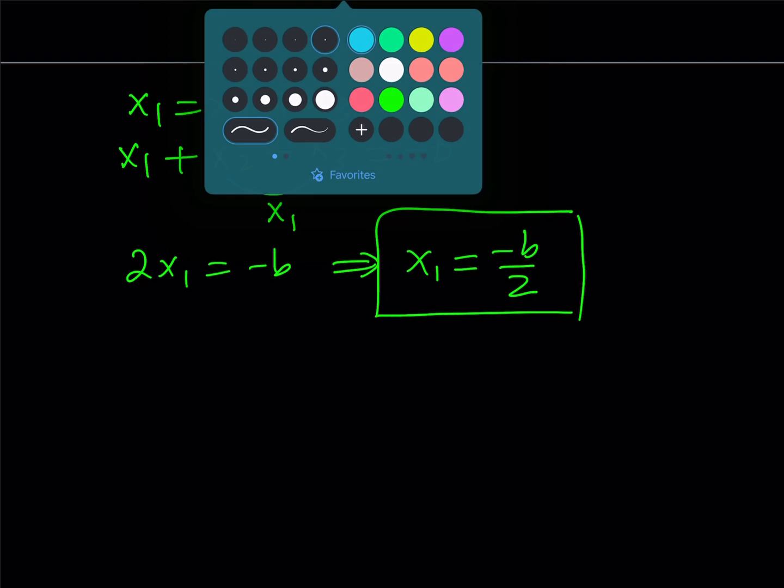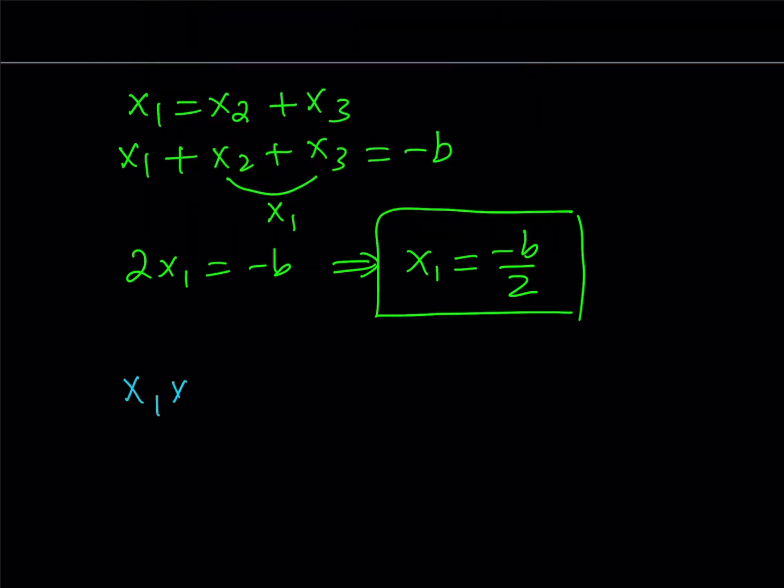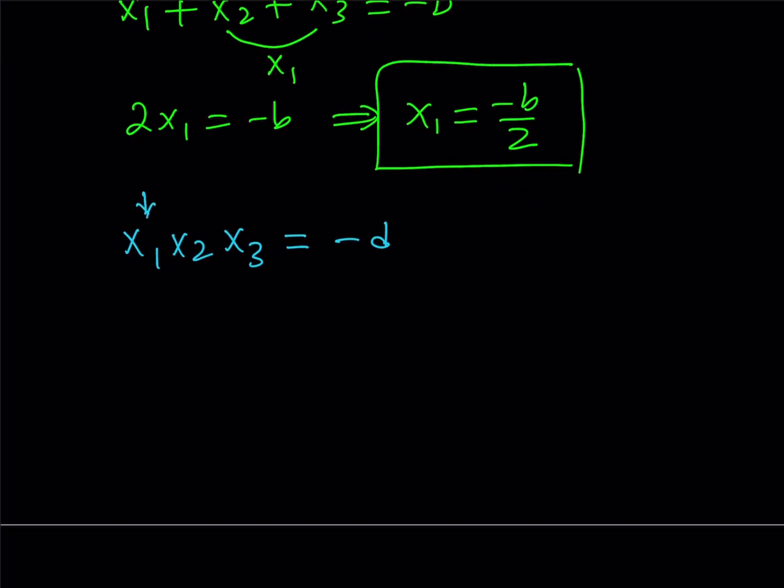What about the product? The product gives us x1*x2*x3, and that is supposed to equal negative d. Now we know one of the roots is x1, so we can substitute that. If we do, we get negative b over 2 times x2*x3 equals negative d. If you divide both sides by negative b over 2, then you get x2*x3 equals 2d over b.